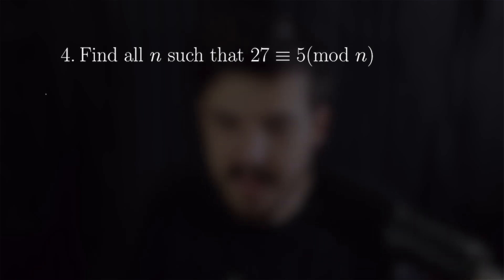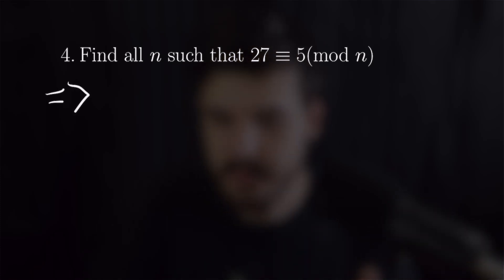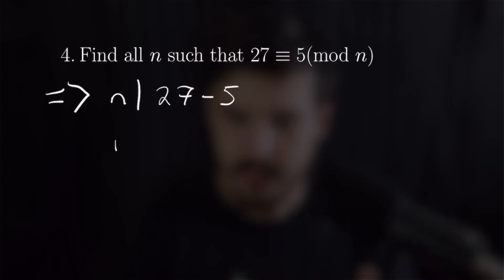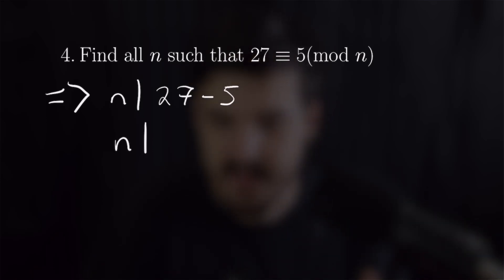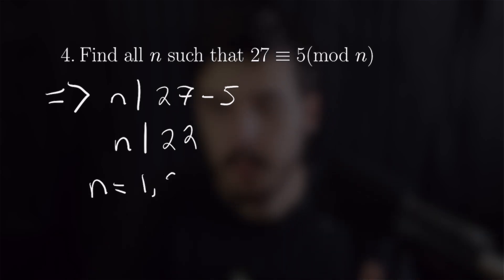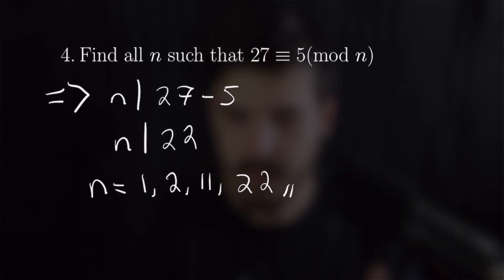For problem 4 we want to find all n such that 27 is congruent to 5 mod n. By definition, n divides 27 minus 5, which is 22. The divisors of 22 are 1, 2, 11, and 22, and those are all the possibilities.